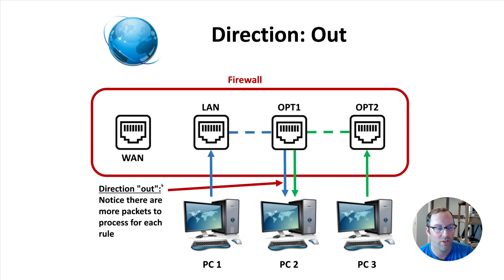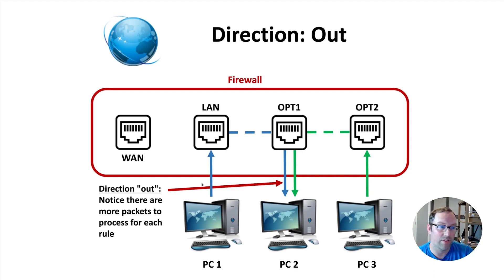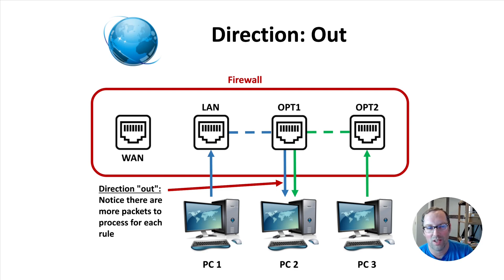If we apply the same basic rule on the Optional One interface with direction out to allow access from PC one to PC two, there's more data to process — that's why out rules are a lot less efficient. Imagine if you have a whole network behind each interface with many computers sending data; there's a lot more to process than if the rule were just on the network where traffic originates. That's one thing to consider with direction out rules. Now I'm going to show a real-world example of how this actually works with your firewall rules, so let me switch over to my PC.